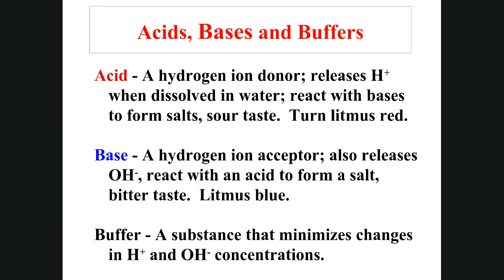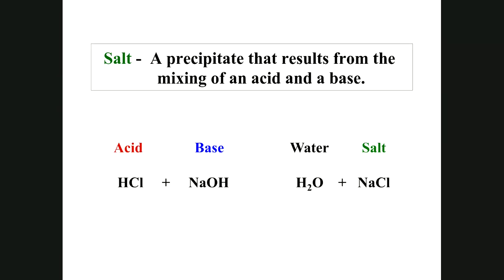A buffer is a substance that minimizes changes in hydrogen and hydroxyl ion concentrations — it stabilizes pH. You have many buffers in your body that maintain your blood pH between 7.35 and 7.45, because you drink a lot of acidic things — coffee, tea, juices, colas. Urea (NH₄) is one example that ties up hydrogen ions to remove them from your system.